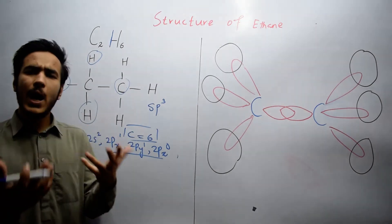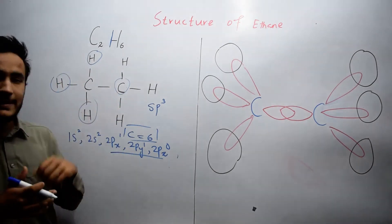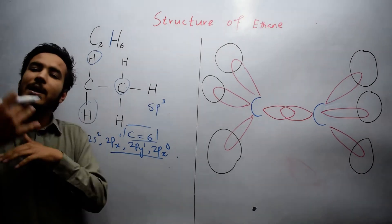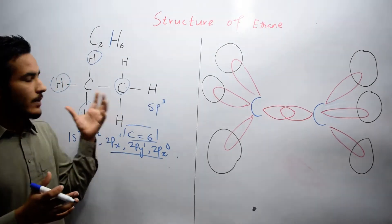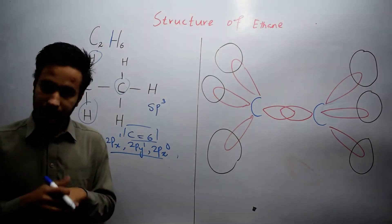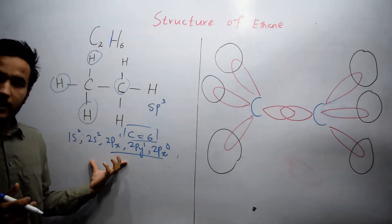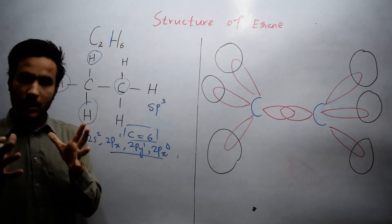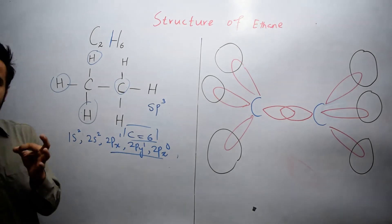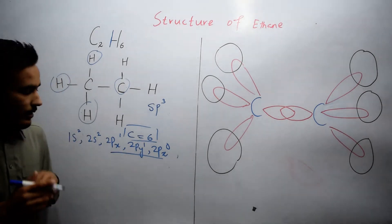Then how does carbon make four bonds in ethane? Hybridization takes place and in this way it forms four bonds. This is the ground state. If we look at the excited state of carbon, we can understand how this happens.